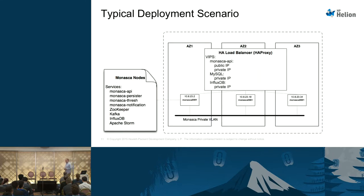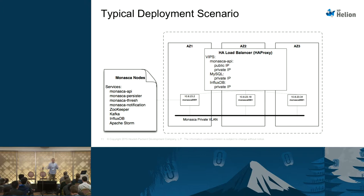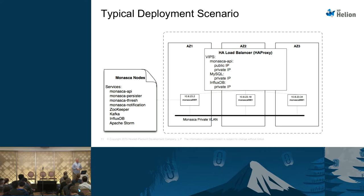Typical deployment scenario: we deploy on three nodes. In this example it's symmetric — all the components are deployed across three nodes, shown as availability zones in this diagram, and there's a load balancer with VIPs. If any one of those nodes goes down, the system stays up and running. When that node comes back online, it can rejoin the cluster. We've done a lot of testing with that, so we know it works.